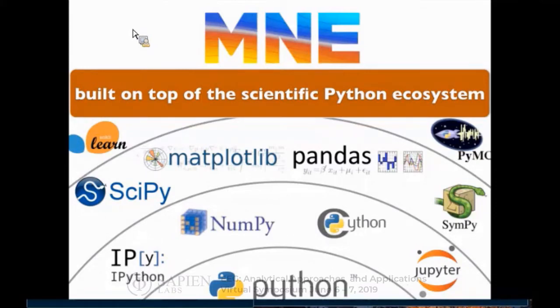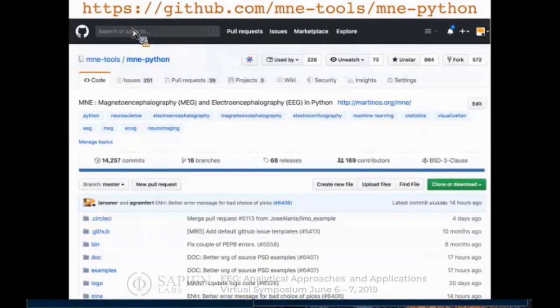You have NumPy which allows you to manipulate matrices and arrays of numbers. You have IPython which is an interactive shell. You have Jupyter notebooks which are becoming extremely popular in science and data science. On top of these building blocks you have the scientific stack: SciPy for linear algebra, optimization, signal processing, and image processing; Matplotlib for visualization; pandas for data frames; and scikit-learn which allows you to do machine learning. MNE is really bringing EEG and MEG processing to this ecosystem.